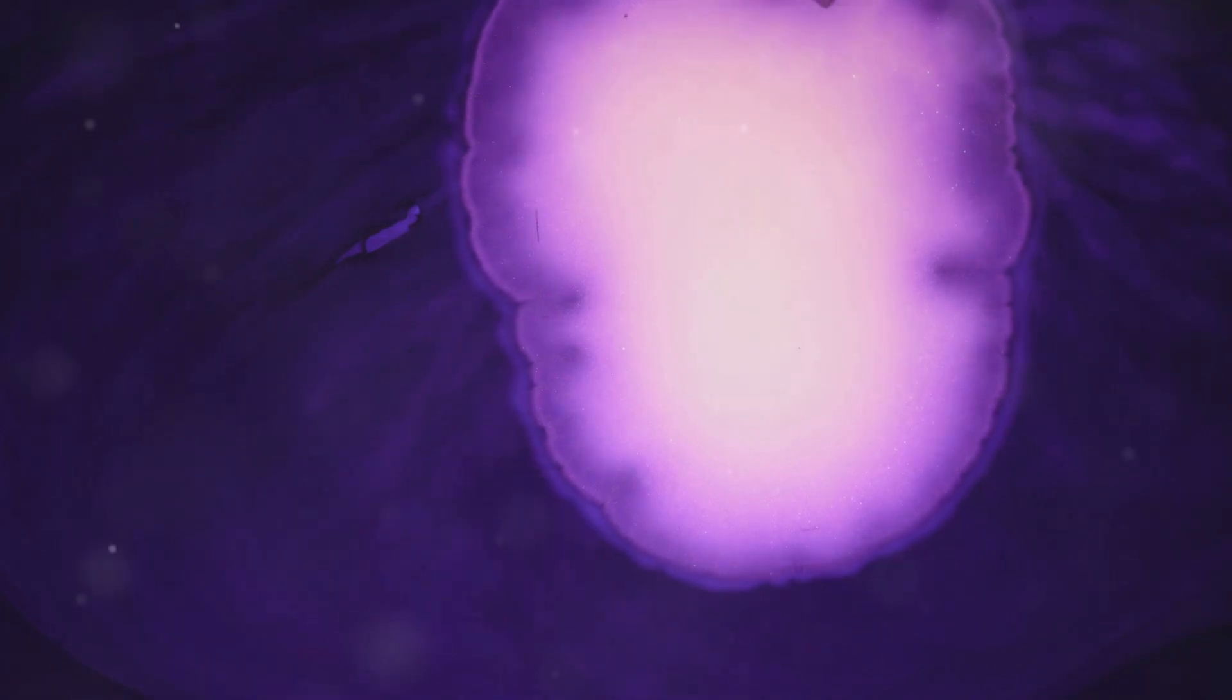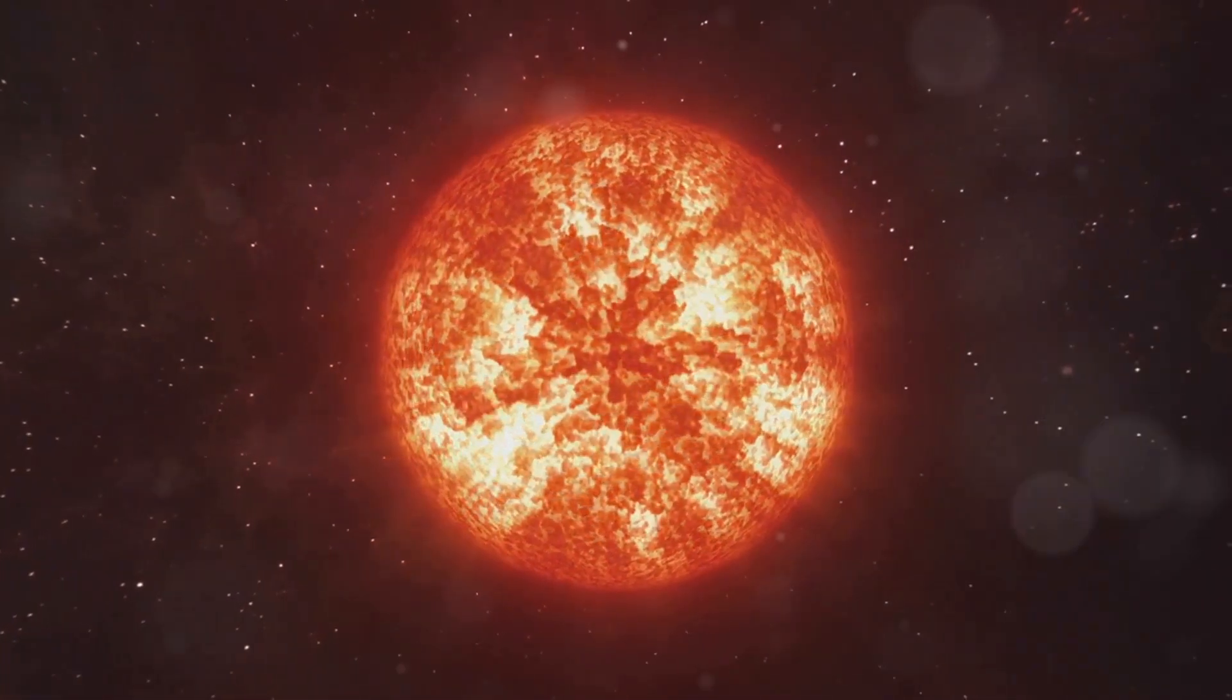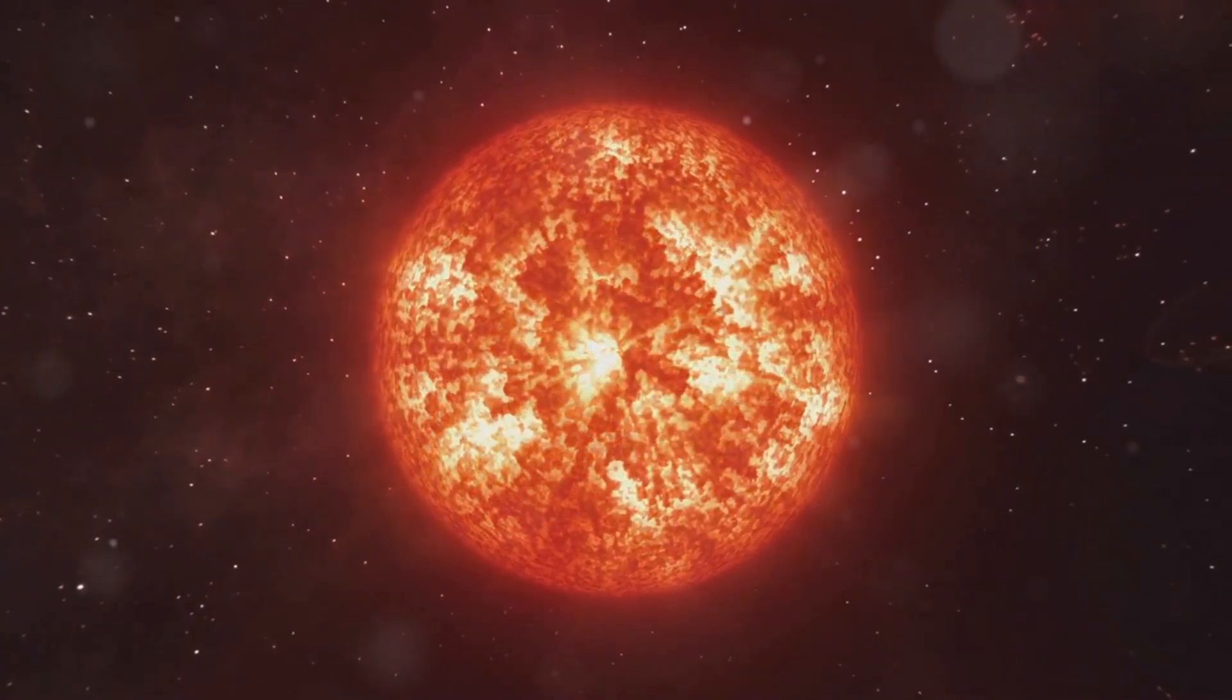Imagine a star much bigger than our sun running out of fuel. These massive stars, often many times the size of our sun, go through a dramatic end-of-life process. It collapses under its own gravity, creating a black hole. This collapse is so powerful that it can trigger the release of enormous amounts of energy.